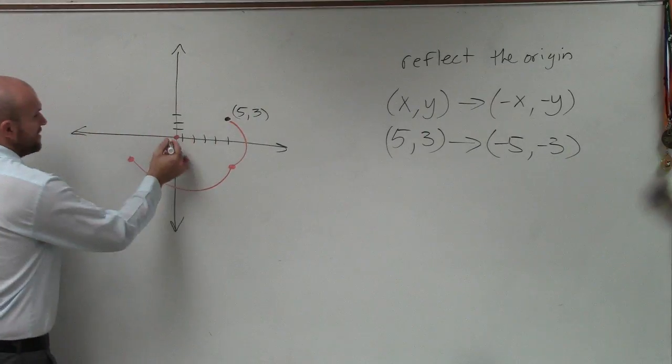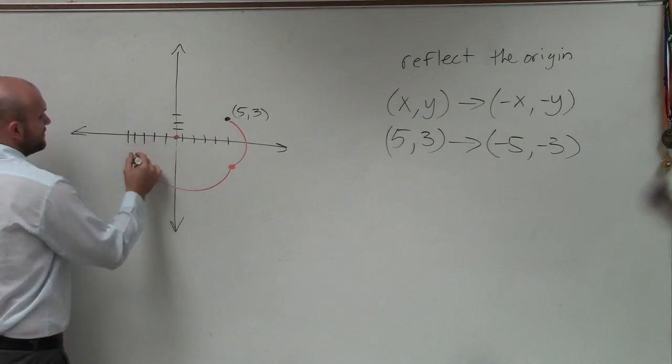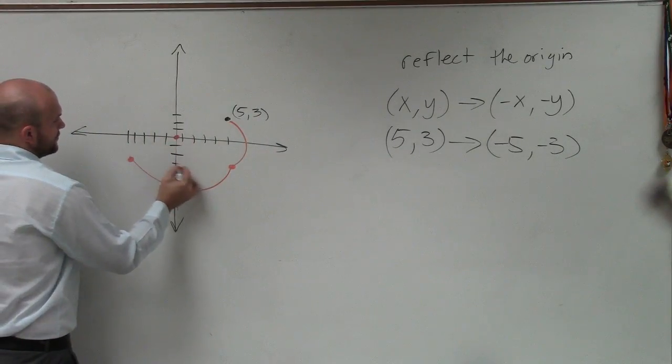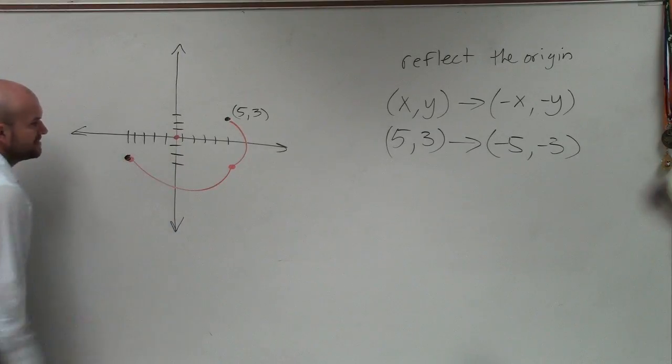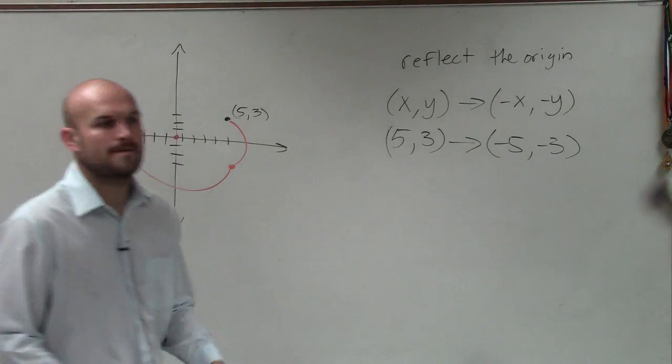So I just go over negative 5: 1, 2, 3, 4, 5, then go down negative 3: 1, 2, 3. You can see it's pretty close.